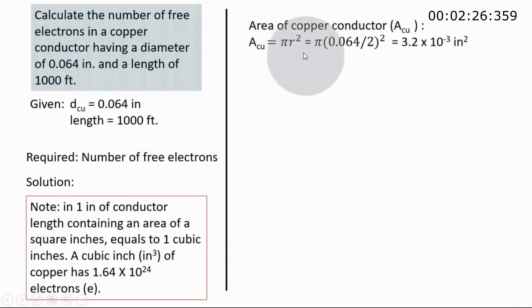We just substitute the value of the radius here to be able for us to get the area of the conductor. We are given here the diameter, so we divide it by 2 and the radius will be given to us. So we just place that here in our r. So that is 0.064 divided by 2, and that will be raised to the second power.